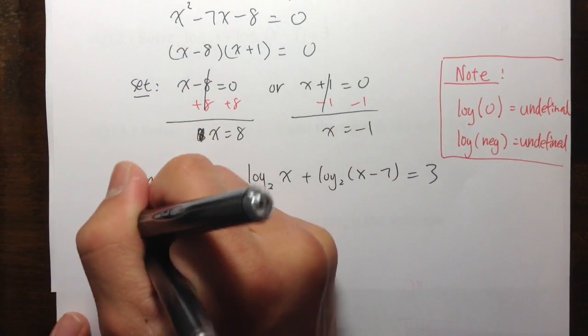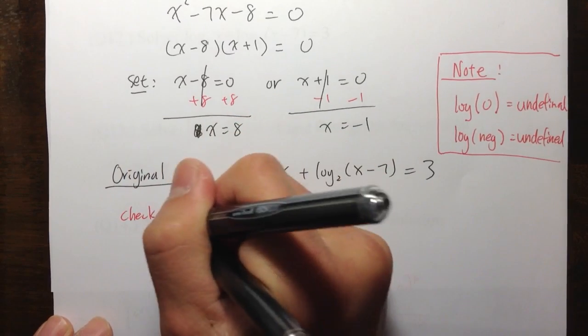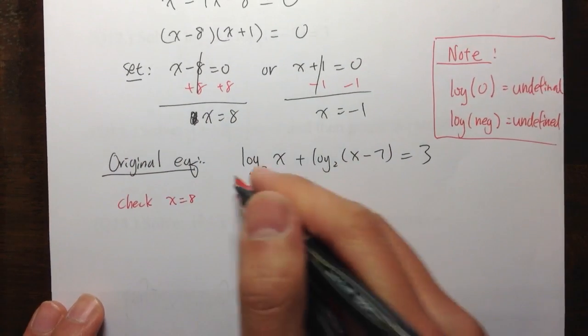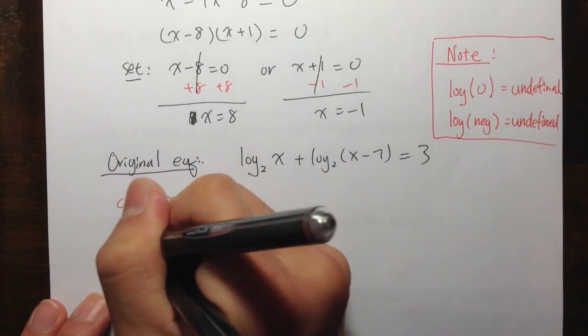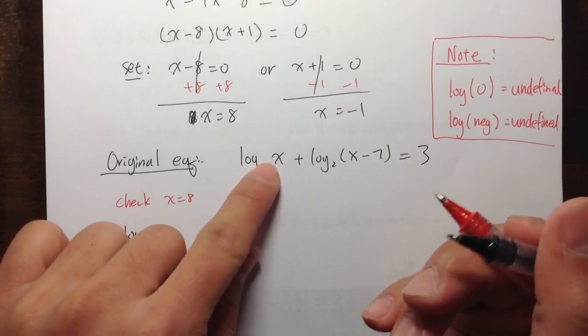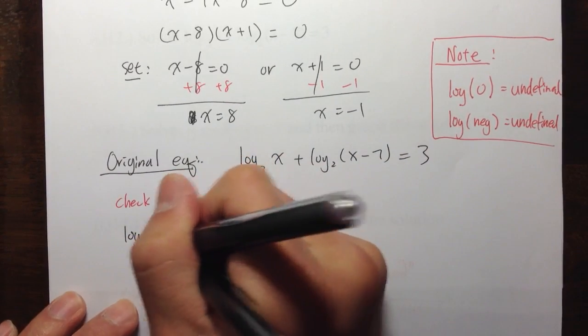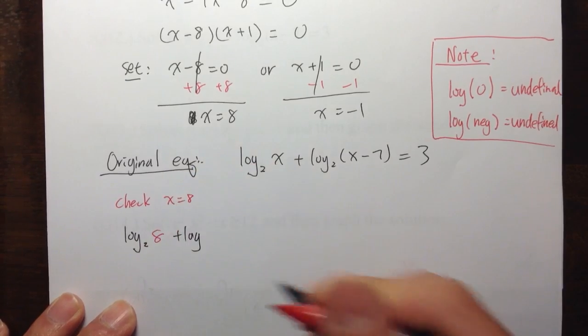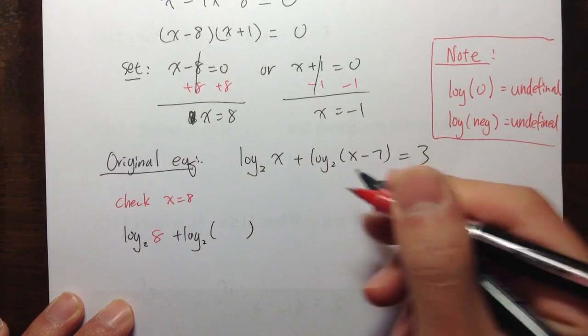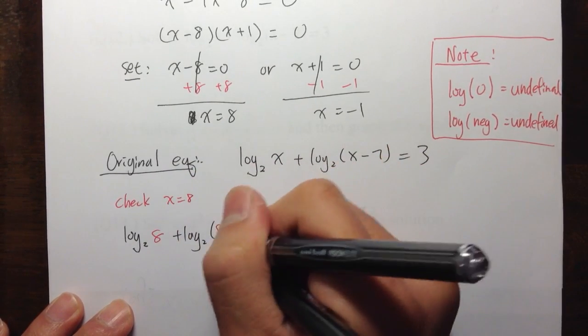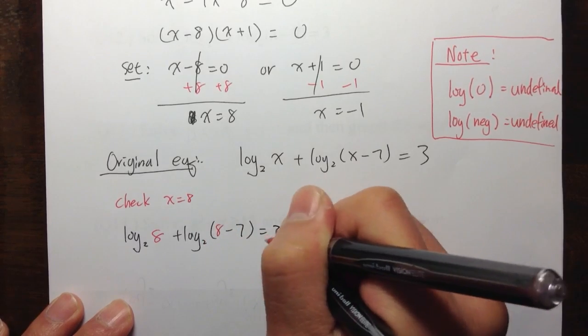So, let me check. Let me do a check for x is equal to 8. So, we will get log base 2. Now, the x becomes 8. And then, plus the rest, plus log base 2. Parentheses. Now, the x becomes 8. Minus 7. That's equal to 3.